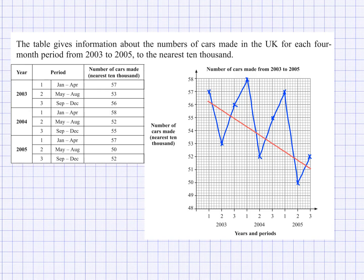You might also notice that in season one, car production is at its highest — it's the highest of the three seasons each year. Season one of 2004 is higher than seasons two and three of 2004, and season one of 2005 is higher than seasons two and three of 2005. So there are two seasonal variations: the lowest production happens in season two and the highest in season one.